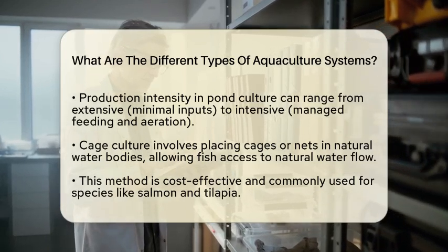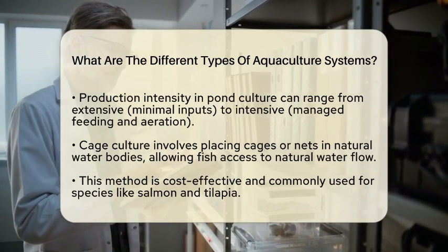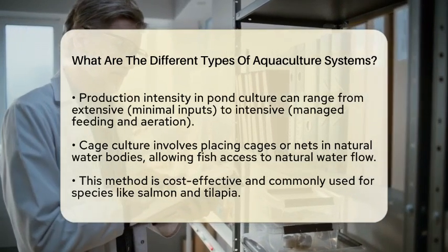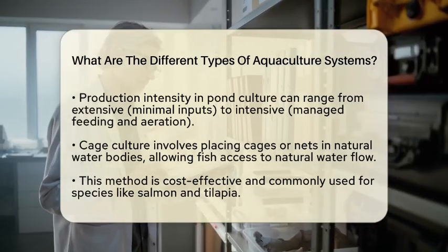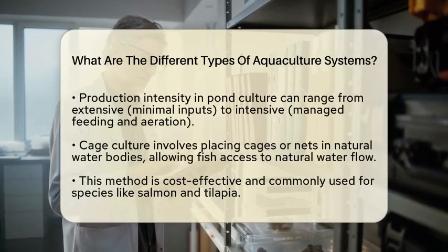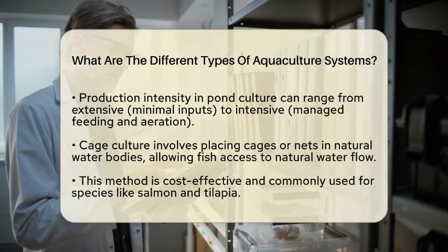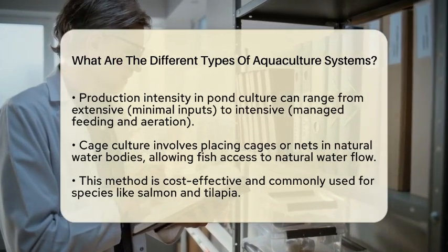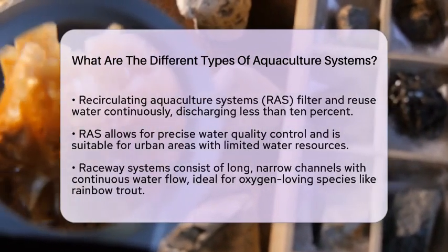Then we have recirculating aquaculture systems, or RAS. These are land-based systems that filter and reuse water continuously. Less than 10% of the water is discharged, making it a sustainable option. RAS allows for precise control over water quality and is suitable for urban areas where water is scarce. Although it requires a higher technological investment, it significantly reduces pollution and water use.